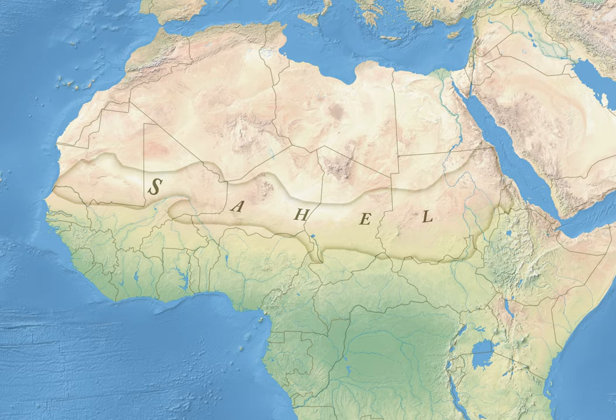Around 4000 BC, the climate of the Sahara and the Sahel started to become drier at an exceedingly fast pace. This climate change caused lakes and rivers to shrink rather significantly and caused increasing desertification, which in turn decreased the amount of land conducive to settlements and caused migrations of farming communities to the more humid climate of West Africa.